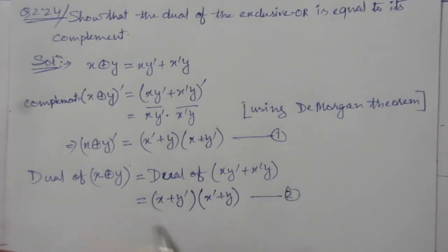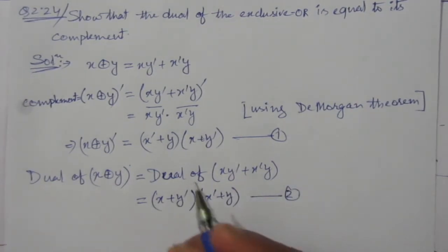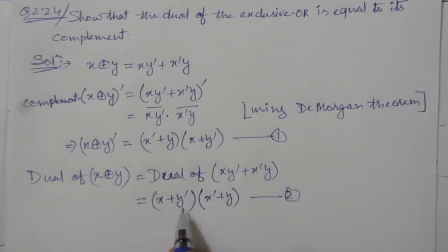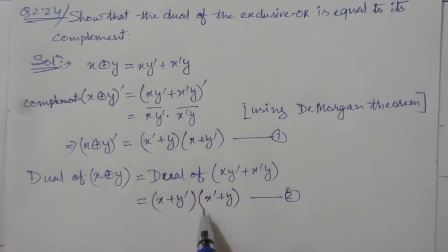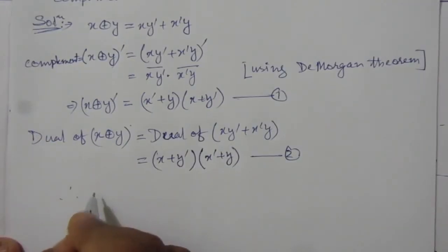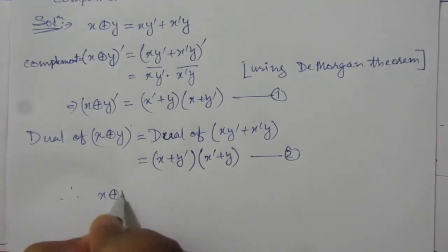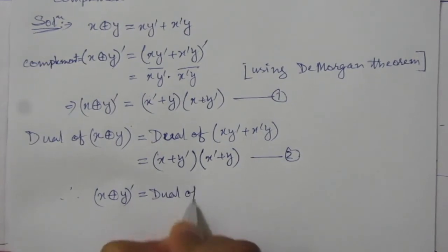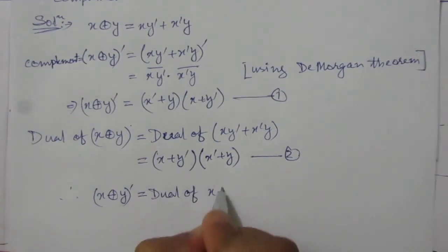So from 1 and 2, we can see that these two are the same. See, x plus y bar, this one is x plus y bar; this is x bar plus y, x bar plus y. Therefore, we can write x XOR y complement equals dual of x XOR y.